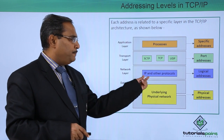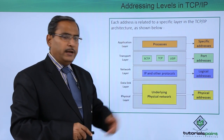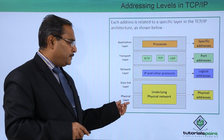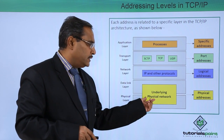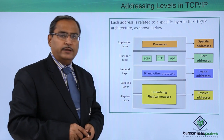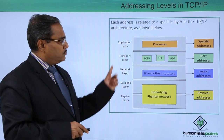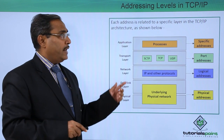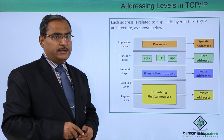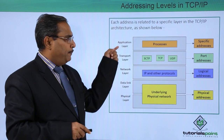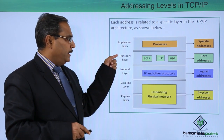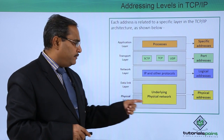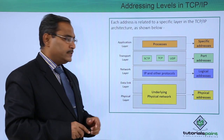In the network layer, that is IP and other protocols, they will be requiring the logical addresses. The data link layer and the physical layer — the underlying physical network — will be requiring the physical addresses. So remember: specific addresses at the application layer, port addresses in the transport layer, logical addresses in the network layer, and physical addresses in the data link and physical layer.